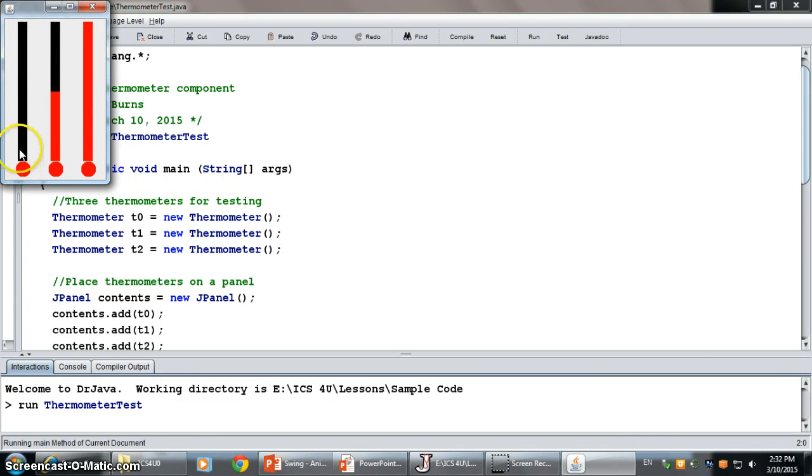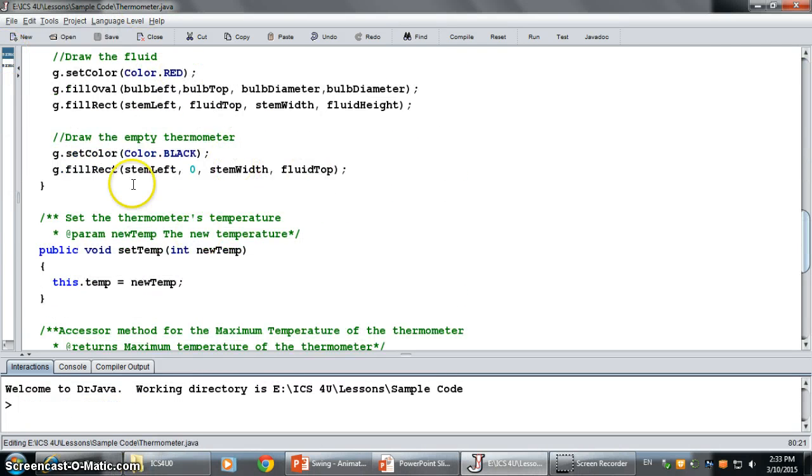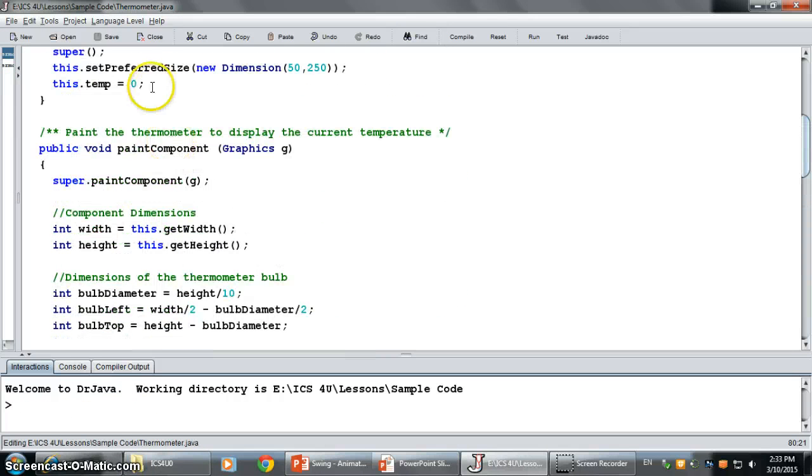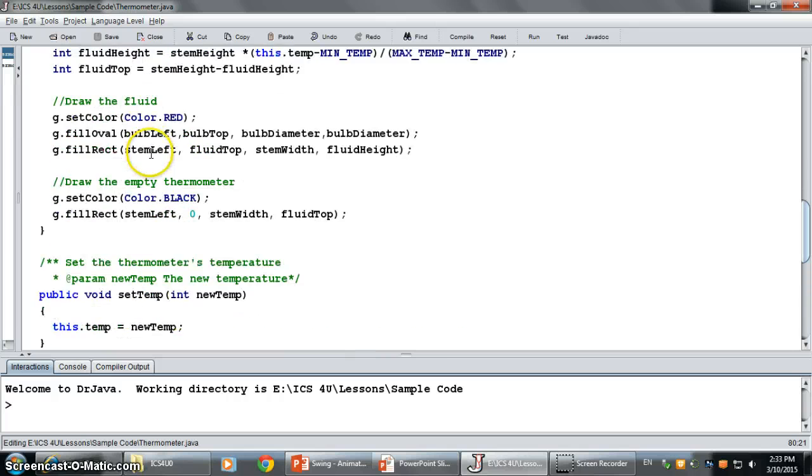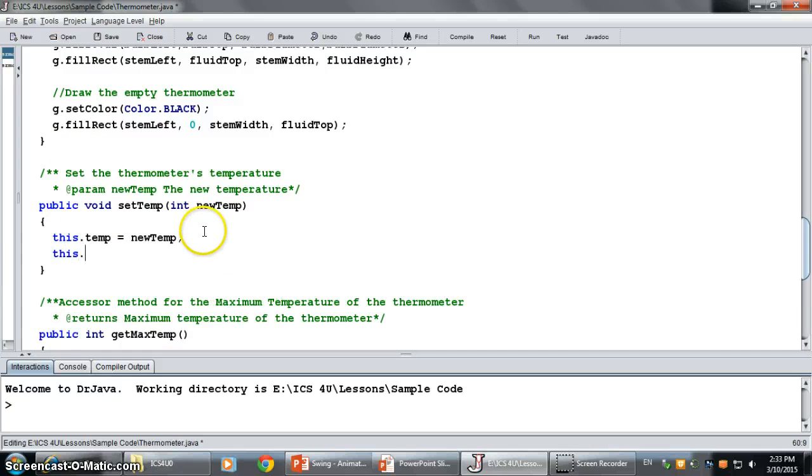So, if I was to compile this and run it, you're going to see that nothing happens. So, why does nothing still happen here? Well, the reason this has nothing happened is because you forgot the very first part, which is the fact that I never repainted. Nowhere in here did I repaint my component.